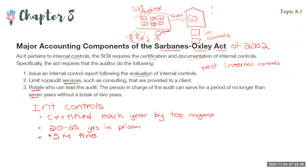When Congress created this law, they really tried to give it some teeth to hold top management accountable, because scandal after scandal showed CEOs saying they didn't know what was going on. That's why they now have to sign and certify that they're aware of all financial statement disclosures, and also that they have an internal control system in place that is working as designed.